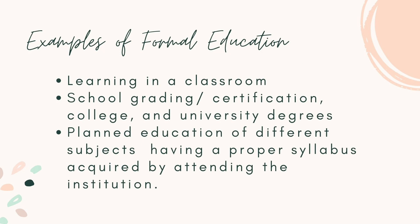Here are the examples of formal education. First, we have learning in a classroom — the traditional approach where students attend a physical classroom to receive instruction from teachers, involving direct interaction between teachers and students. Next is school grading, certification, college, and university degrees. And lastly, planned education of different subjects having a proper syllabus acquired by attending the institution. Formal education involves a planned and structured curriculum covering various subjects, with institutions developing specific syllabi outlining topics, learning objectives, and content to be covered.